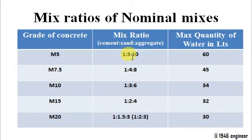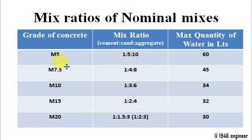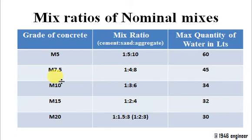One unit of cement with five units of sand and ten units of aggregate, when mixed with a maximum of 60 liters of water, is going to produce M5 grade of concrete.